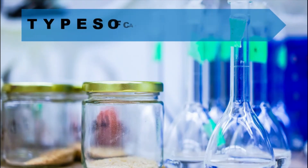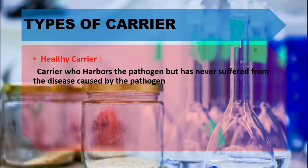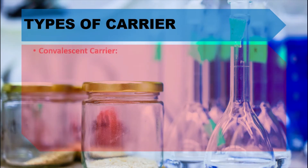Now, as far as the carrier is concerned, we will see the different types of carriers. Carriers are divided into different groups. The first is the healthy carrier — a carrier who harbors the pathogen but has never suffered from the disease caused by it. This means you may be a carrier because you are healthy and have never suffered from the disease, but you may harbor the pathogenic organisms.